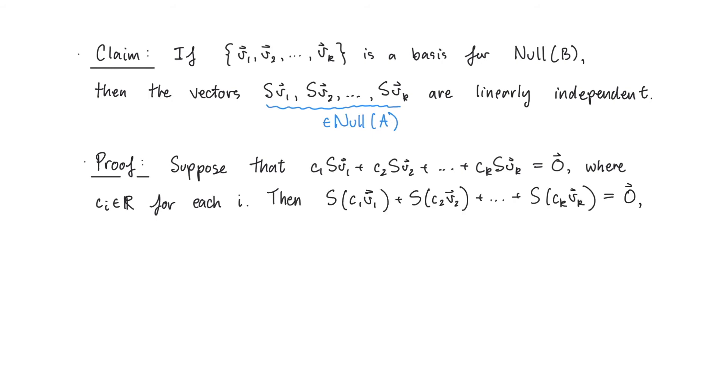Well, by linearity we can move the constants in between the matrix and the vectors, and then by linearity again, we can pull the S out of all of these terms. So, we get that S times C1 times V1, plus C2 times V2, all the way up to Ck times Vk, is equal to 0.